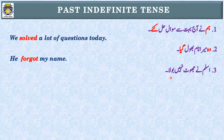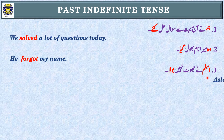For a negative sentence in past indefinite tense, after identifying the tense and subject, instead of using the second form, we use 'did not' with the first form of the verb to construct the negative.